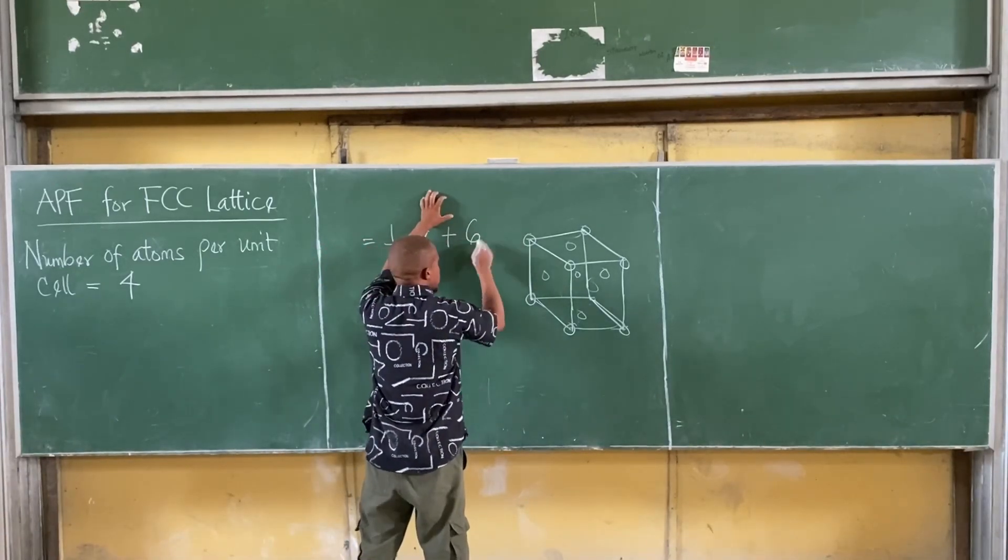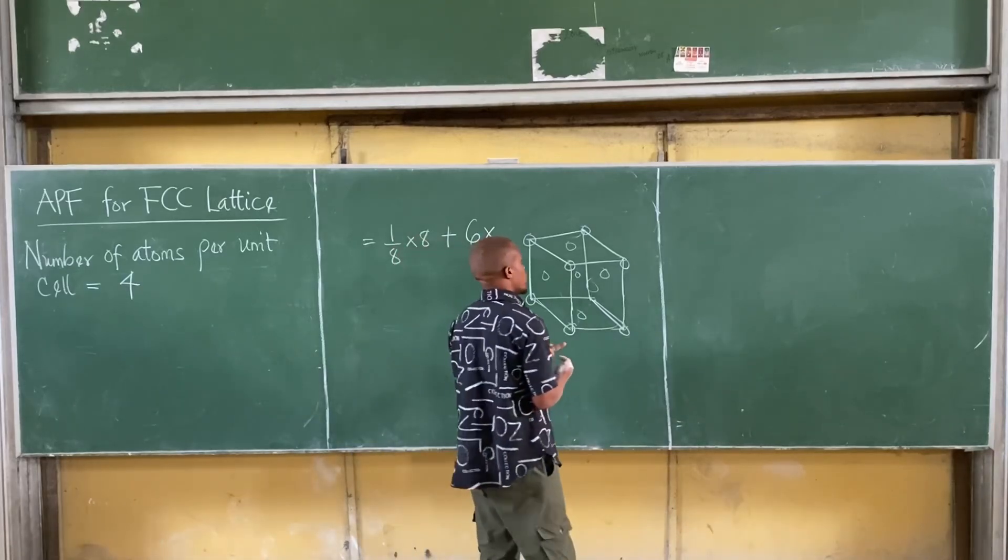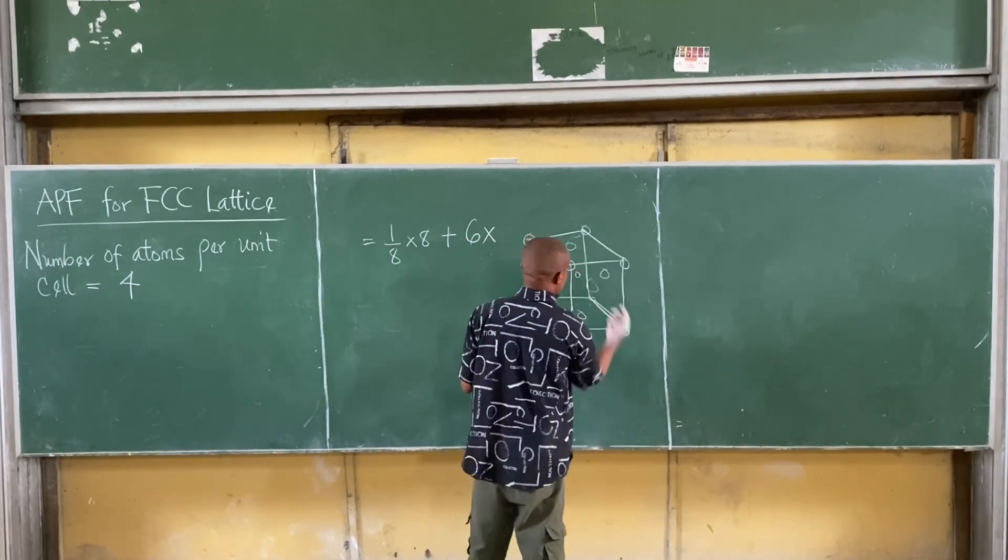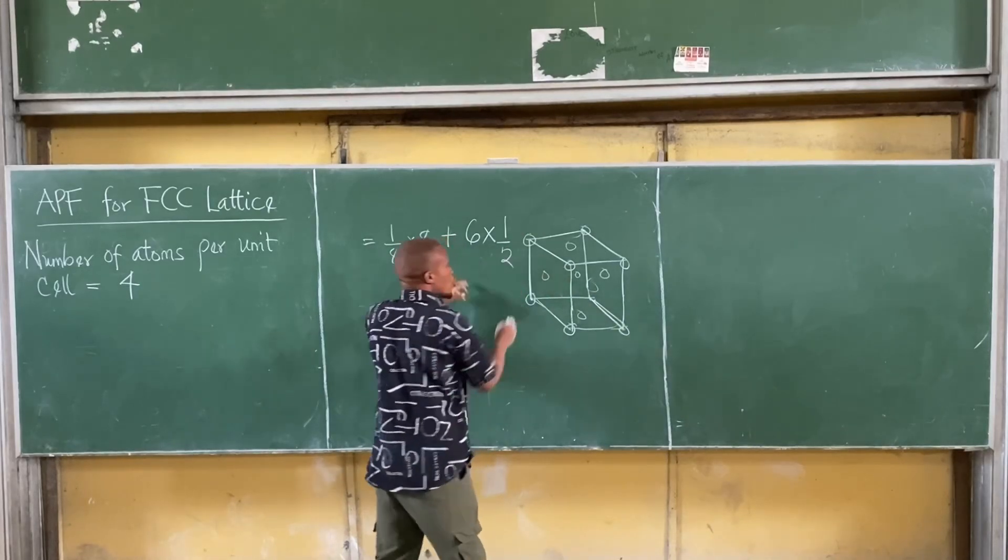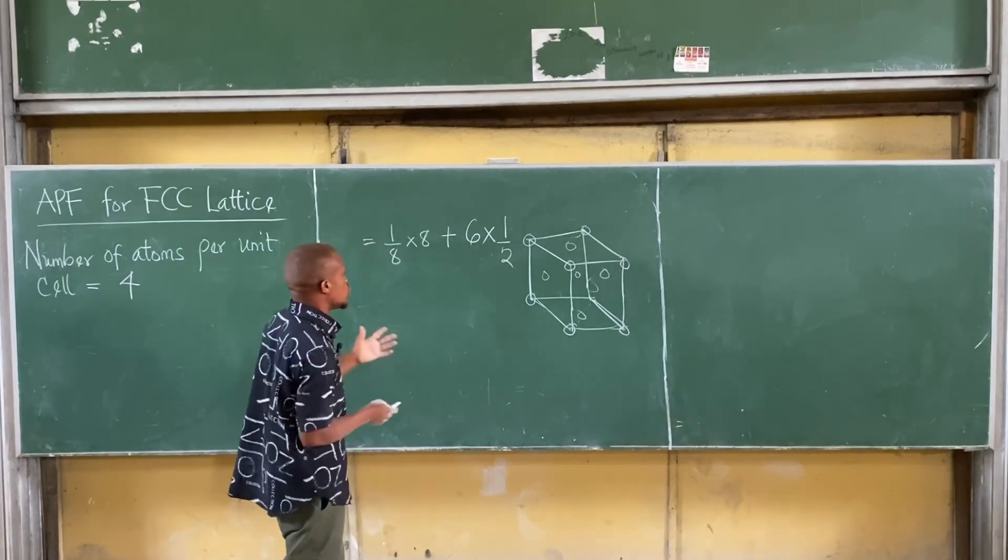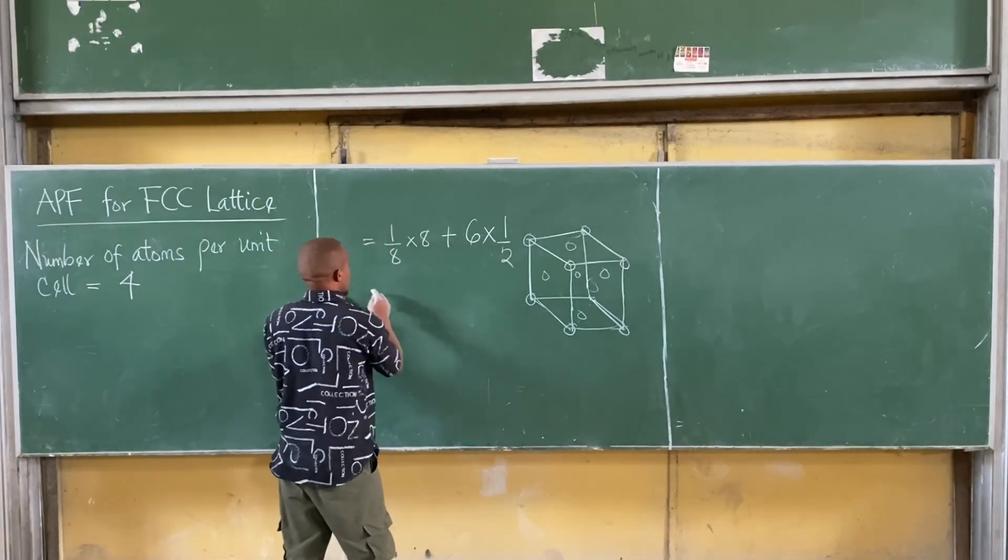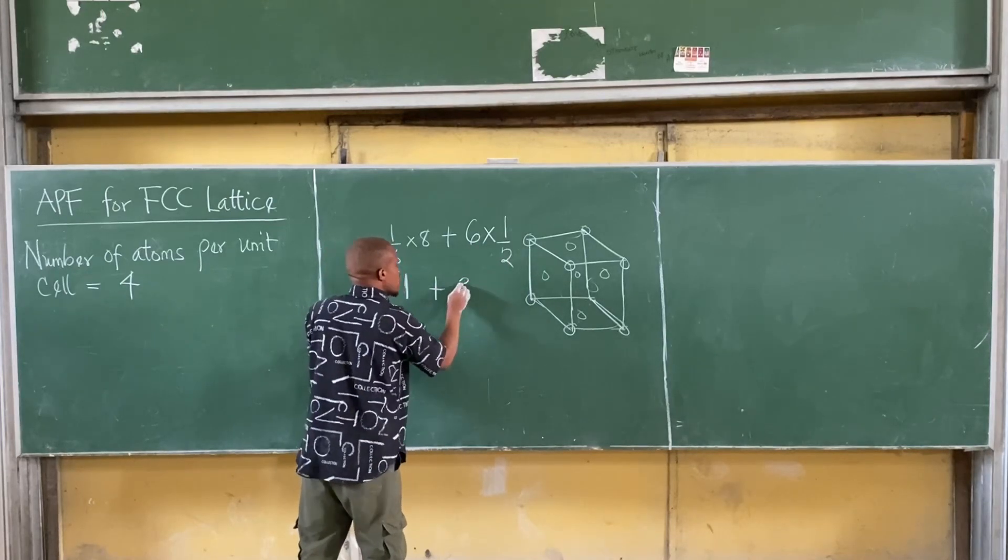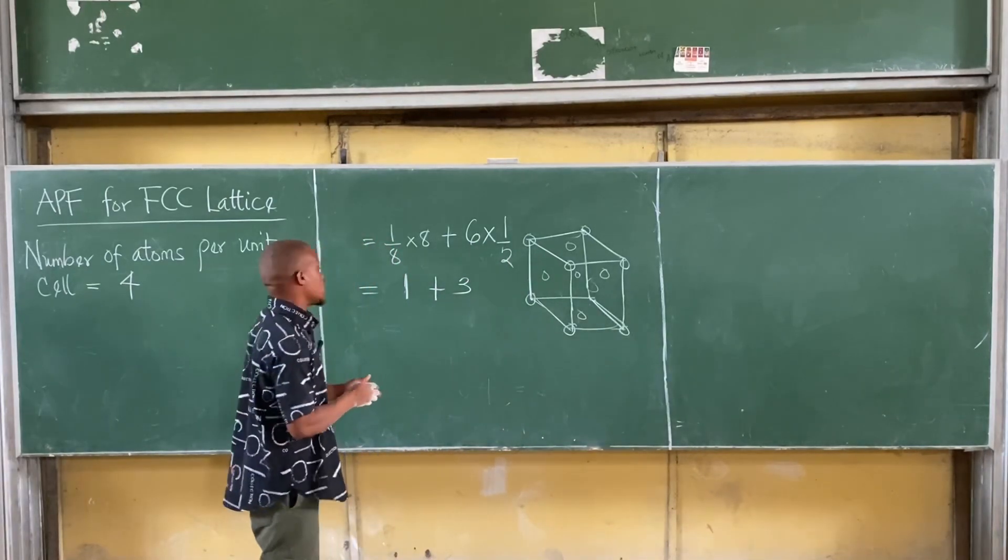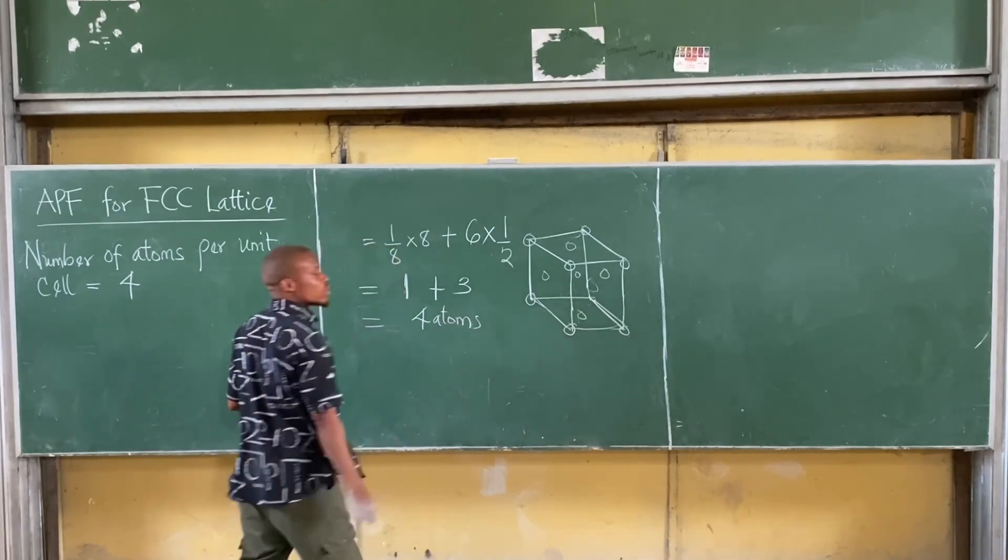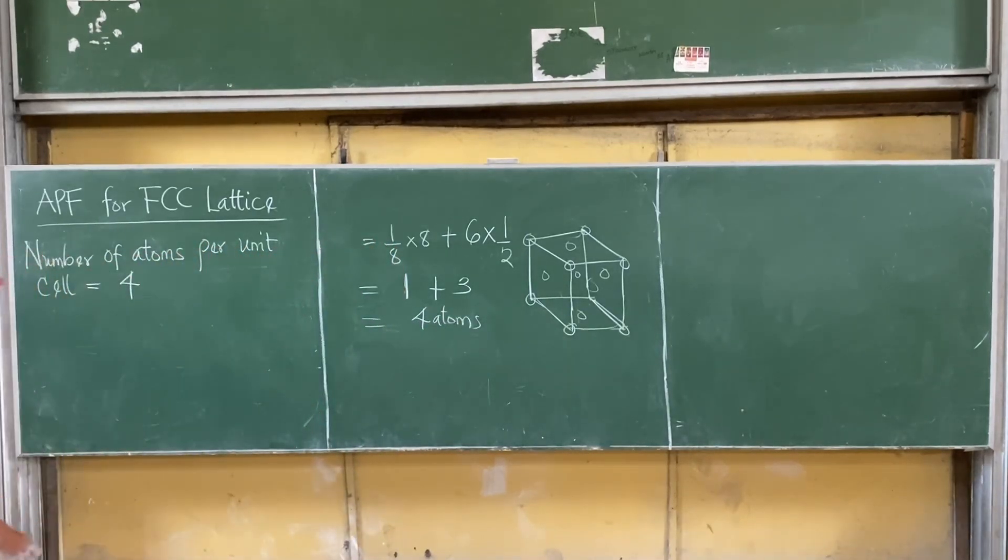So, we have 6 times, for each of them, we have 2 neighbors. For each of the faces, we have 2 neighbors. So, we have 1/2. It will only contribute half for each of those faces. Half of the atoms for each of those faces. So, what do I have here? 1 plus 6 times 1/2 gives me 3. Therefore, in total, there are 4 atoms. There are 4 atoms for a FCC lattice.